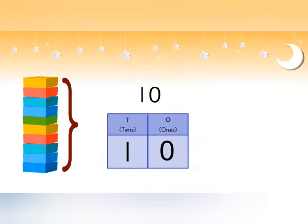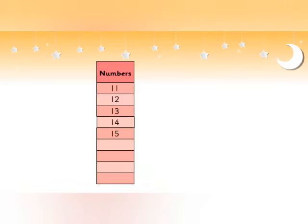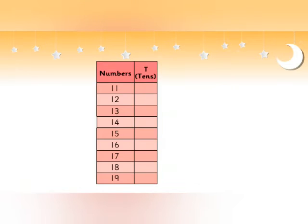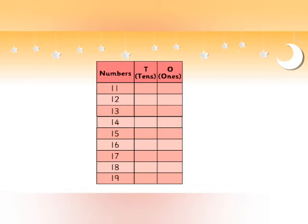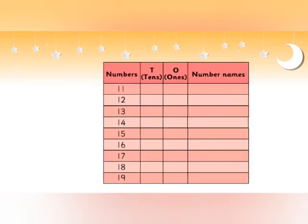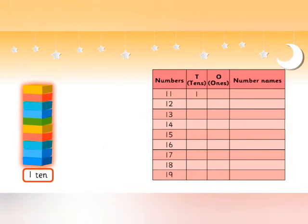We call this 10 ones, or 10 units, or 1 ten and 0 ones. Now let's break the numbers 11 to 19 into tens and ones, and also learn their number names. 1 ten and 1 one is 11. 1 ten and 2 ones is 12.